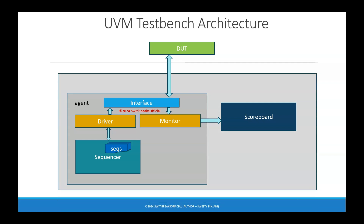All these things — your agents, scoreboard, and more — are present inside a component called the environment. The environment can be considered as a container which contains your agent (or multiple agents depending on your design), the scoreboard, any additional checkers if you want extra checks, and coverage collectors if you want to do coverage. So the environment consists of: agents, scoreboard, coverage collectors if needed, and additional checkers if needed.